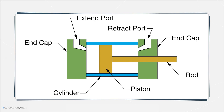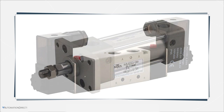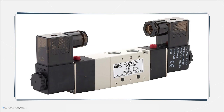In a typical application, the actuator body is connected to a support frame and the end of the rod is connected to a machine element that is to be moved. A directional control valve is used to provide a path of compressed air to the extend port, while allowing the exhaust air to escape through the valve to the atmosphere.